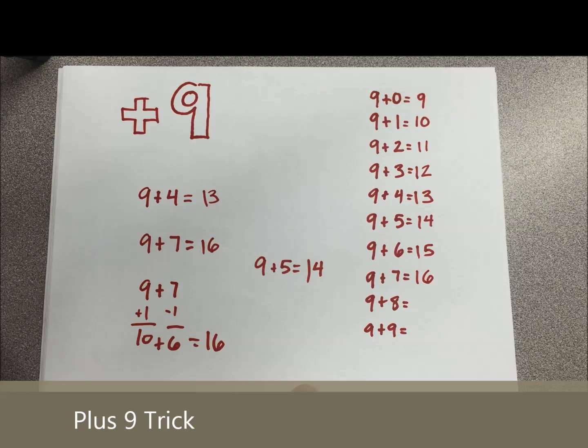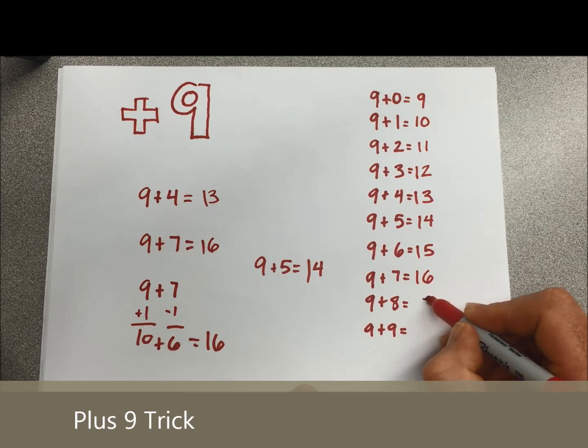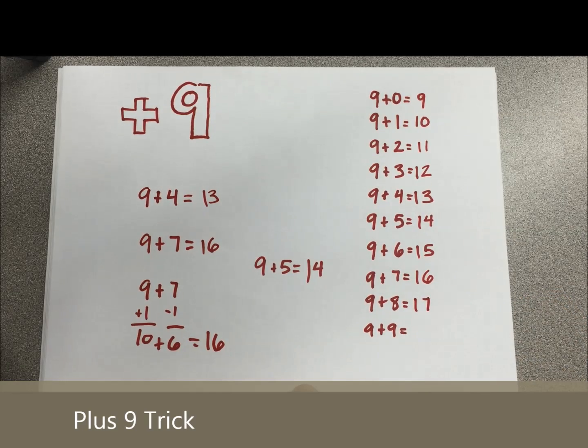9 plus 8, picking up speed now, drop the 8 down to a 7, slap a 1 in front, we have 17. 9 plus 9, drop the 9 to an 8, put a 1 in front, 18.